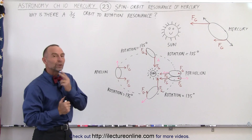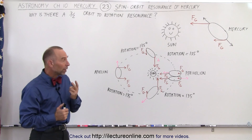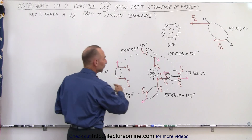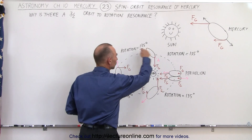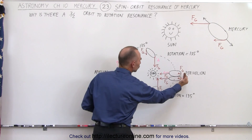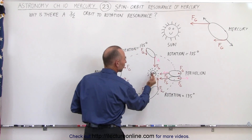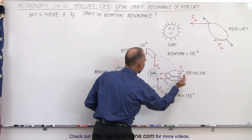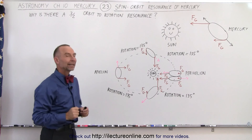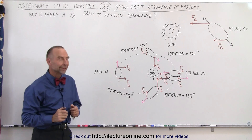There are two reasons for it. First, Mercury has an extremely elliptical orbit, so it's much closer to the Sun at perihelion and much farther away at aphelion.